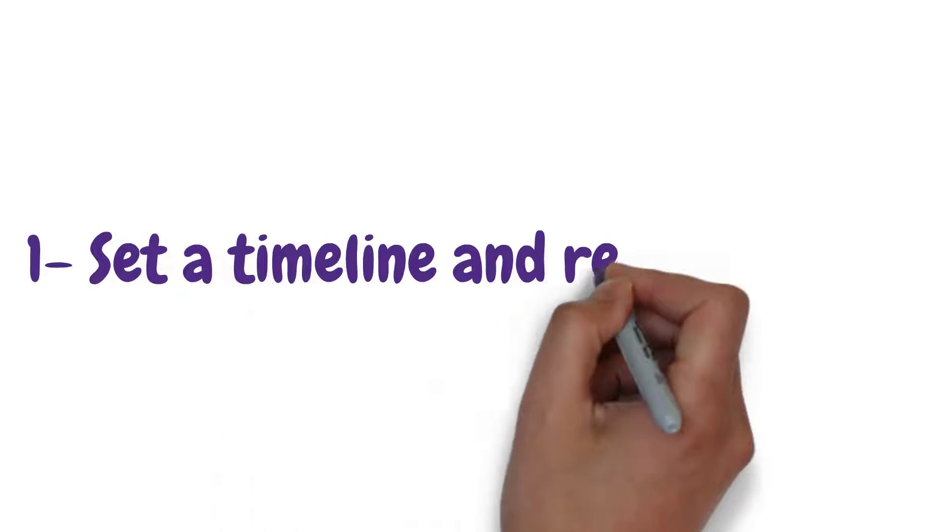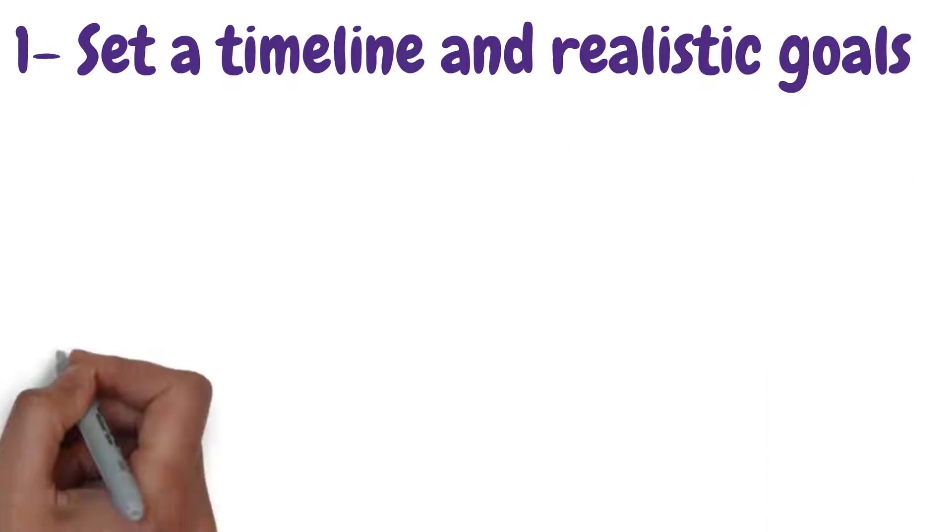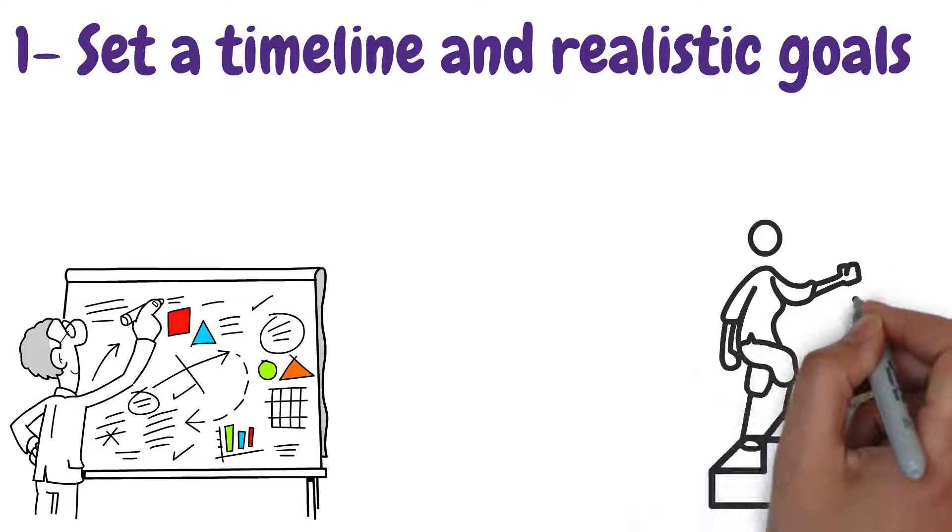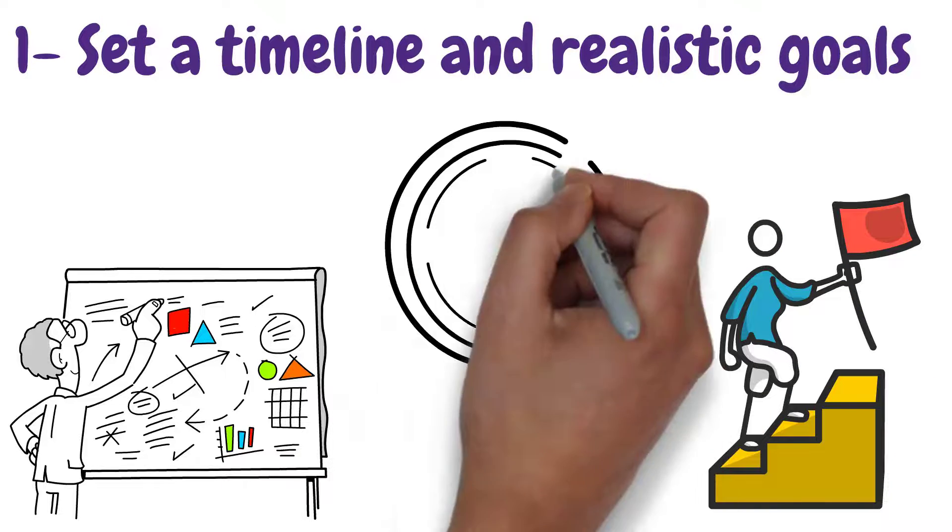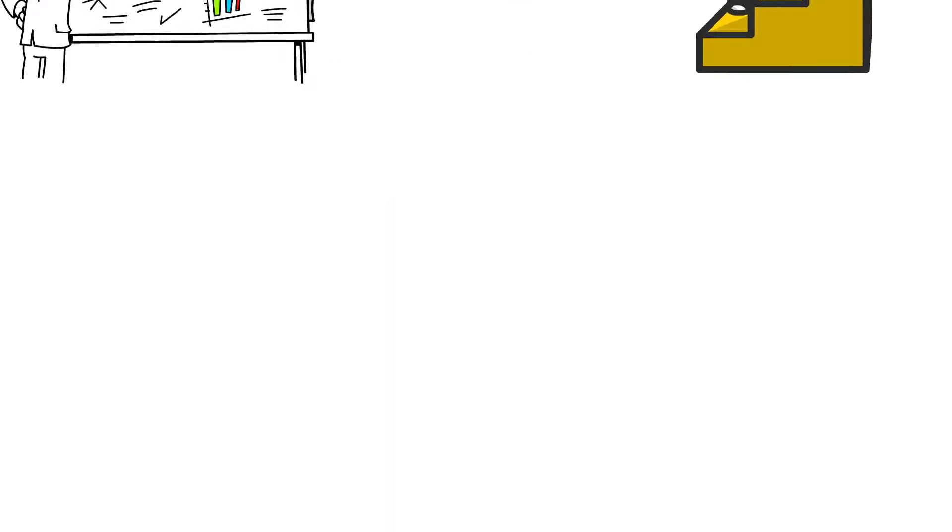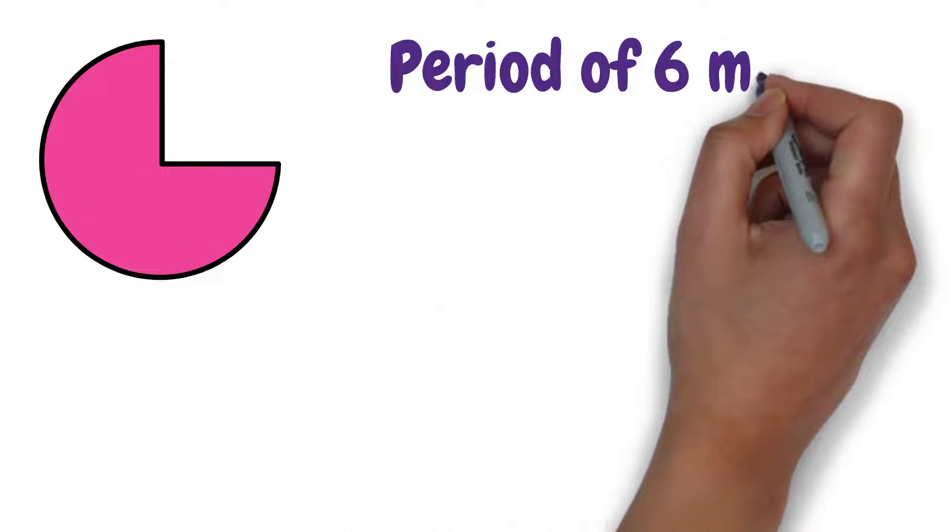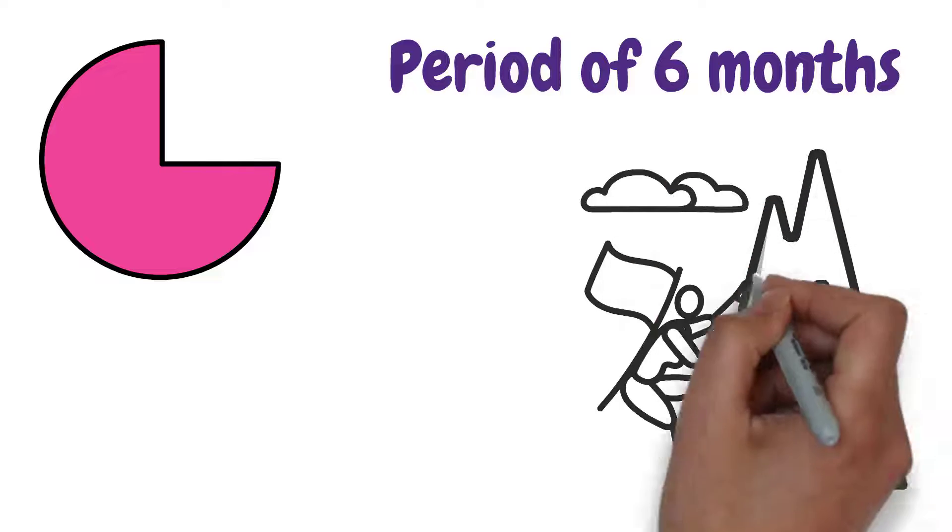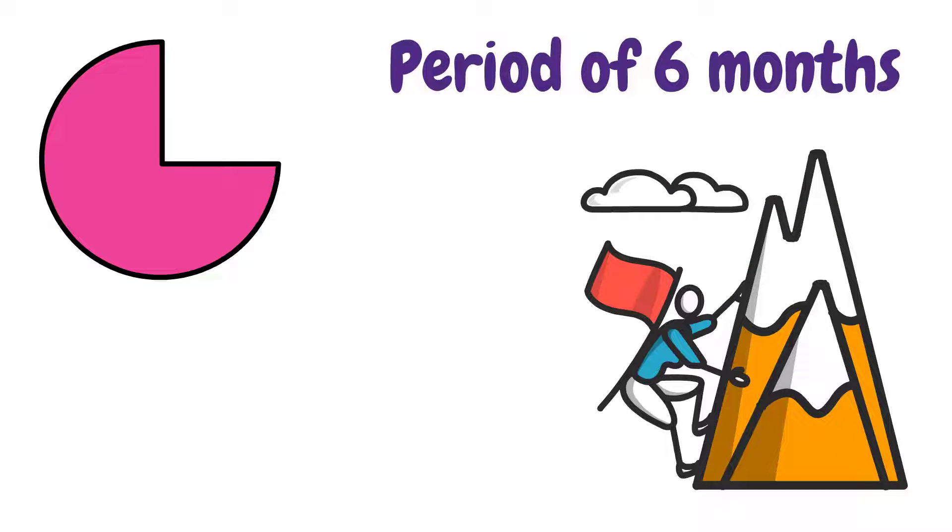One, set a timeline and realistic goals. For every marketing strategy that you make, you'd need to have a set goal in mind that you are supposed to reach by the end of a preset timeline. Your marketing strategy can be quarterly, over a period of six months, or yearly. In all cases, have a clear and realistic goal, one that you are able to measure.